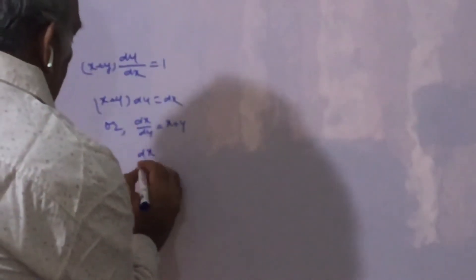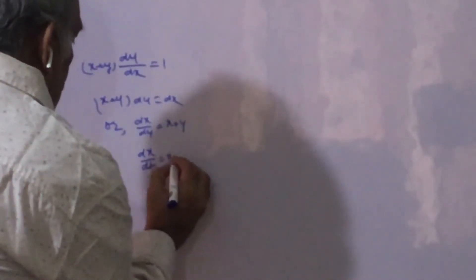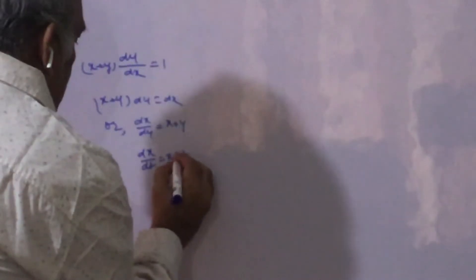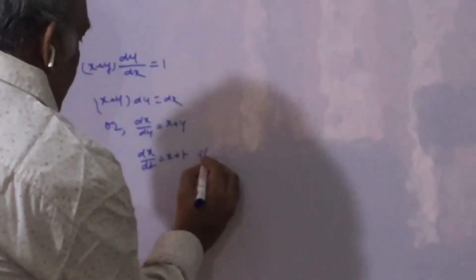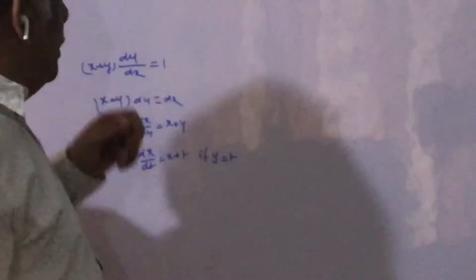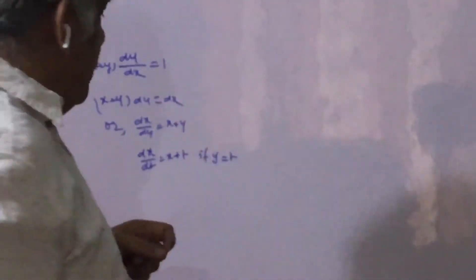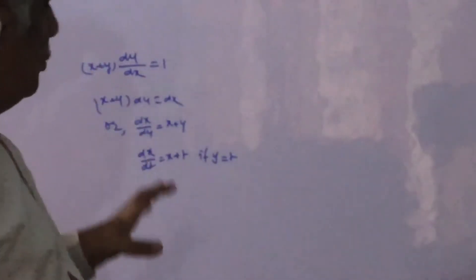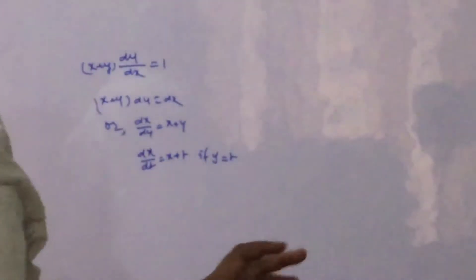We write dx/dt = x + t, where we are replacing y by t, so that it becomes easy to solve. Otherwise there is no need to substitute; it just makes the equation easier.